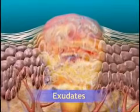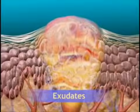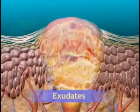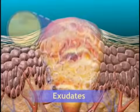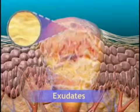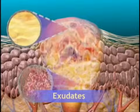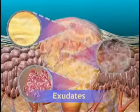Exudates are composed of serous fluid, red blood cells, fibrinogen, or tissue debris and white blood cell breakdown products.